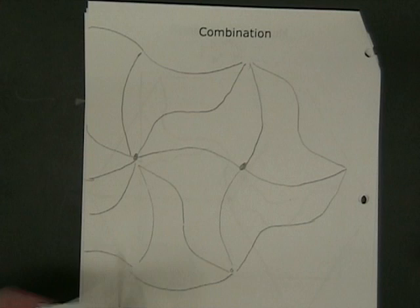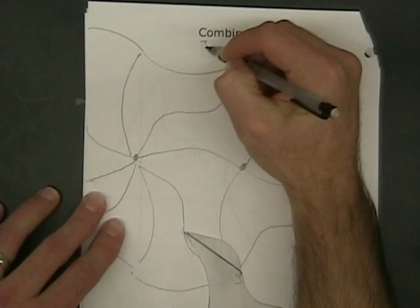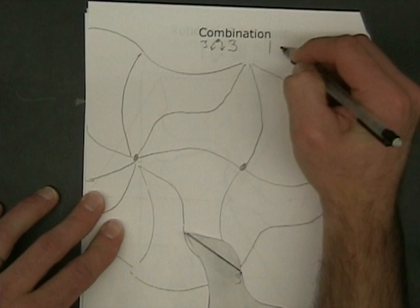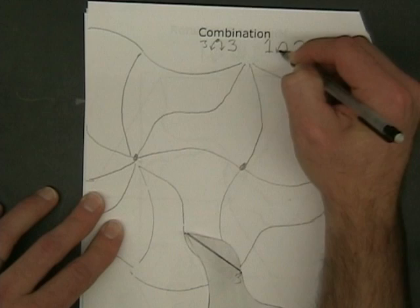The notation for this combination. I started on side three and I ended on side three with a midpoint rotation. I started on side one and ended on side two with a rotation about a vertex.